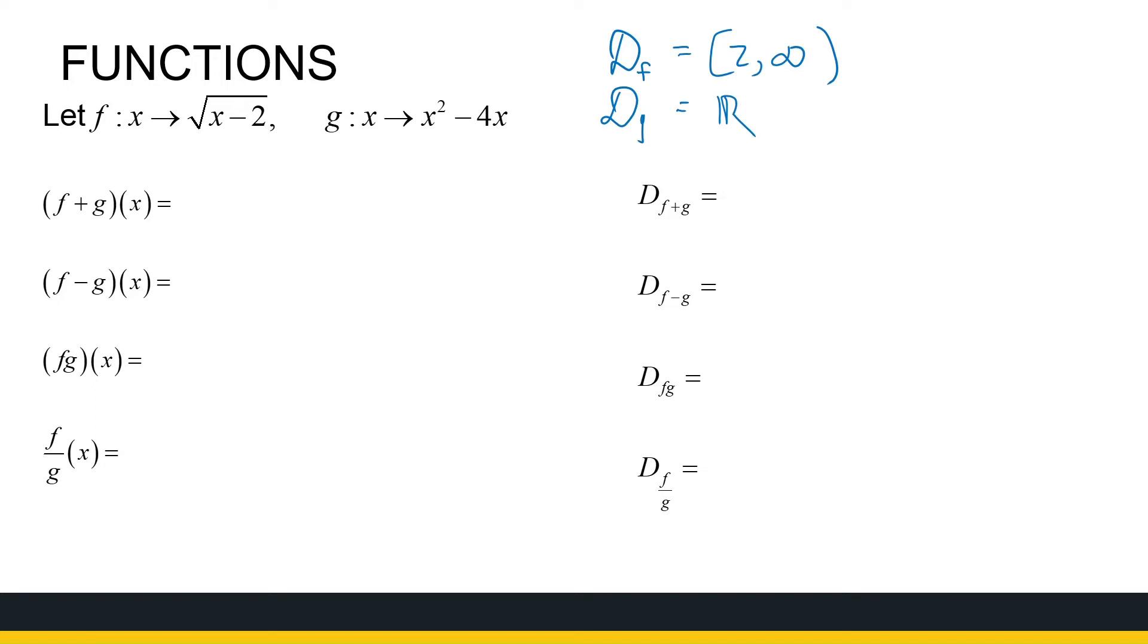So let's look at the sum function. What this says, it's just f of x plus g of x. So it's the root of x minus 2 plus x squared minus 4x. We can't simplify it further. It's very simple, and the domain is just the intersection of the two domains. So that's everything from 2 to infinity.